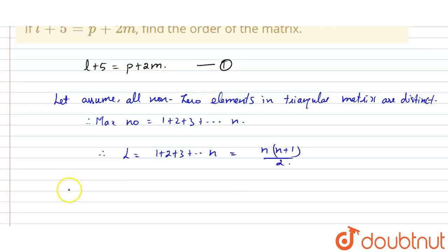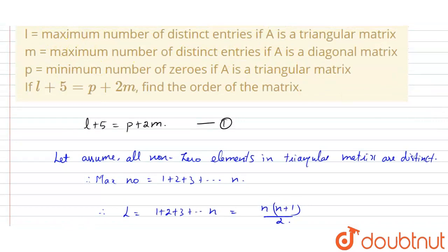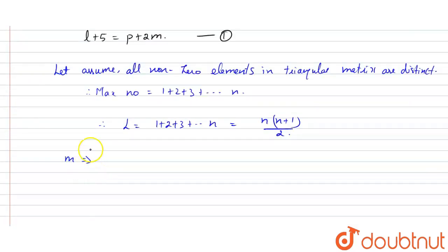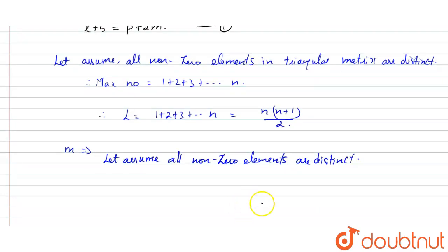Next, I'm going to find the m value. m is the maximum number of distinct entries of a diagonal matrix. Let us assume all non-zero elements are distinct. In each column there is one non-zero element.